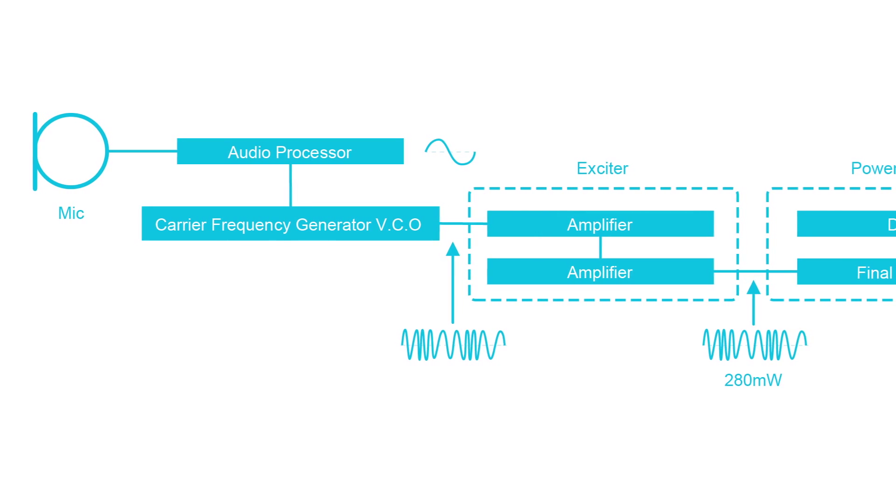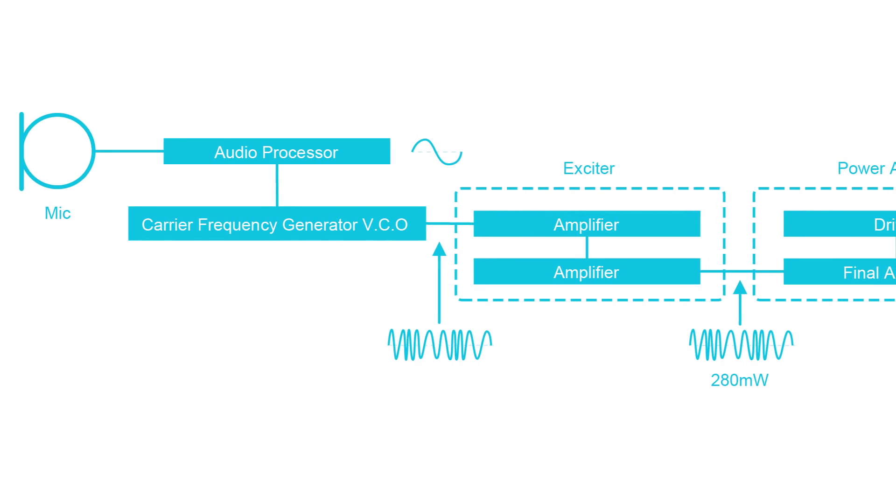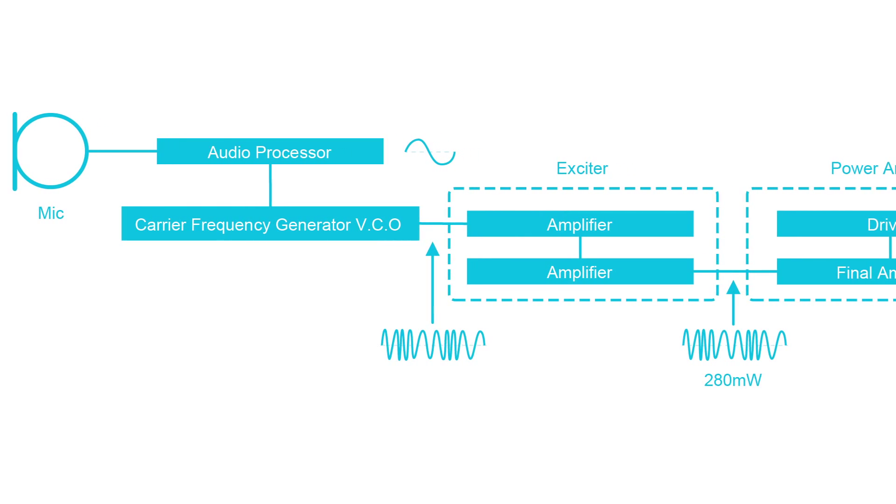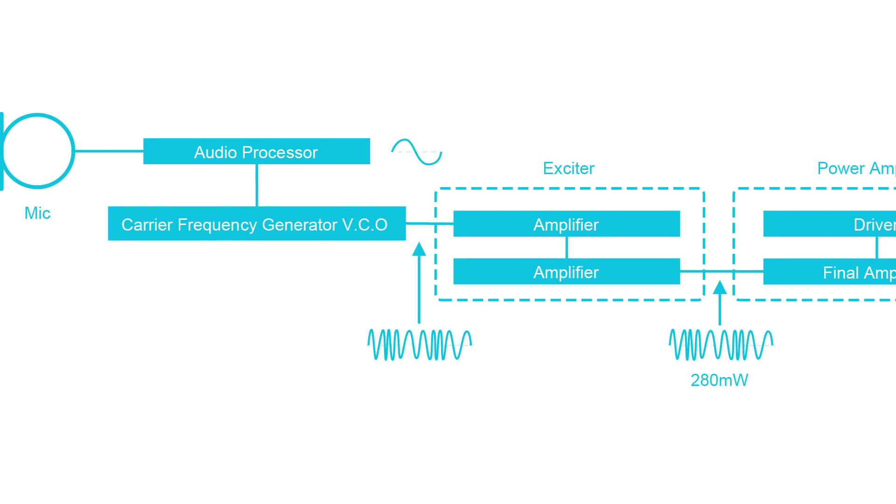On an analog FM channel, when the PTT is pressed, the microphone converts the speech into an analog electrical signal. It is amplified and filtered to pass only frequencies in the range 300 Hz to 3 kHz. This audio band contains all the frequencies required to understand human voice. The audio may also be pre-emphasized, which allows for some of the noise picked up during transmission to be reduced in the receiver.